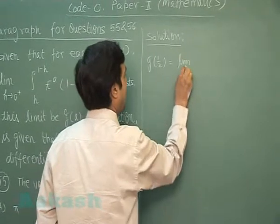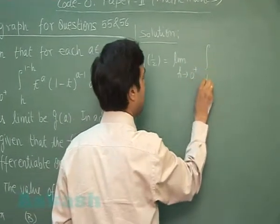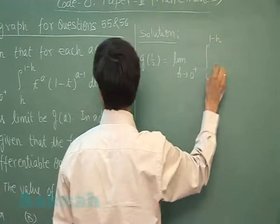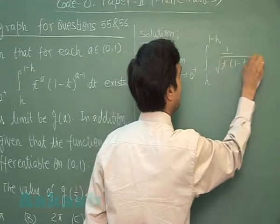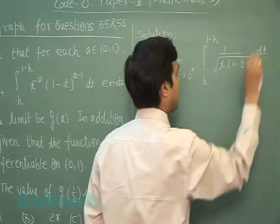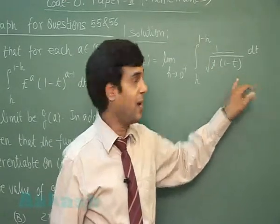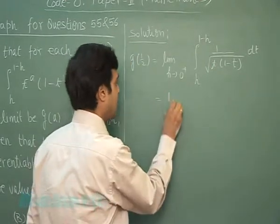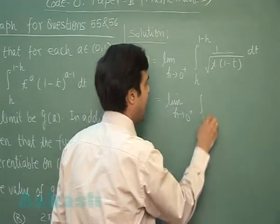limit h approaching 0+ integral h to 1-h of 1/t · 1/√(1-t) dt, which can be converted into difference of perfect squares.